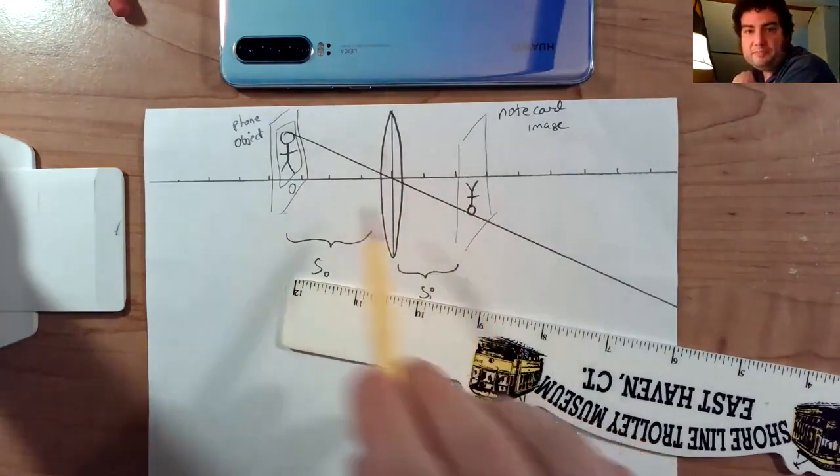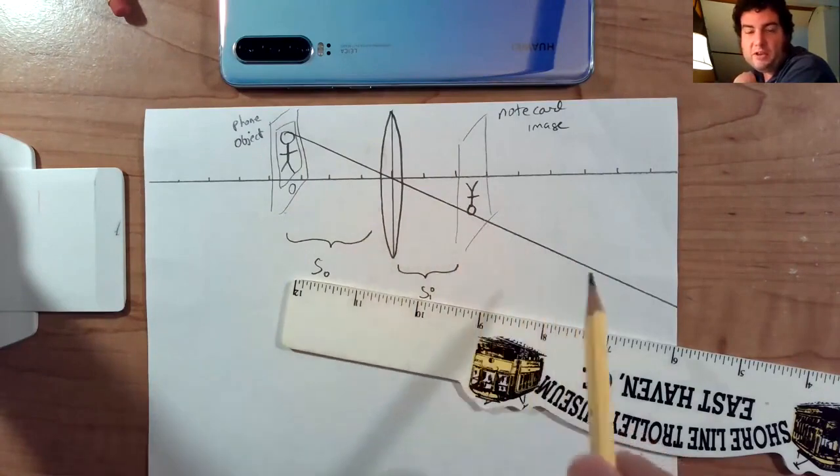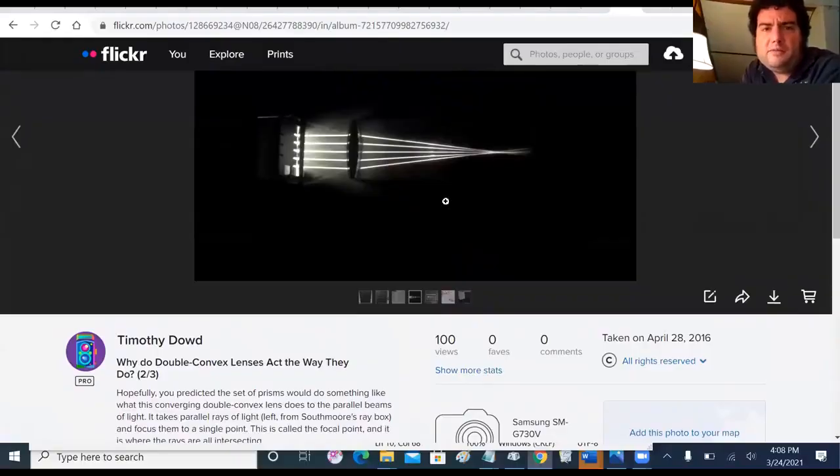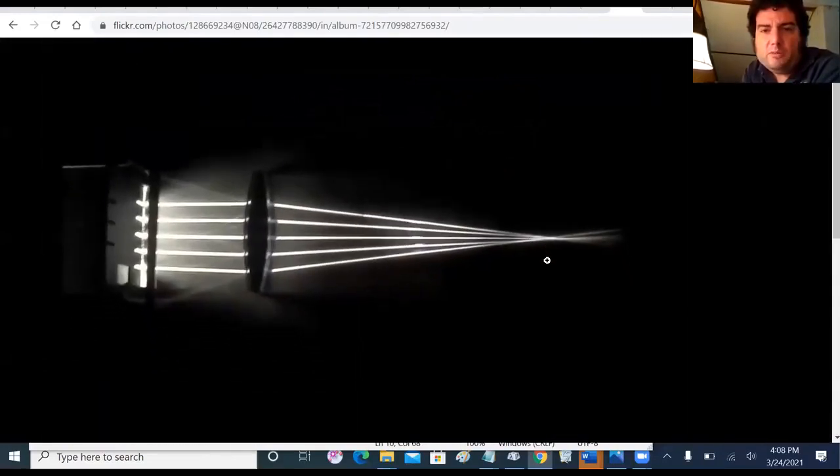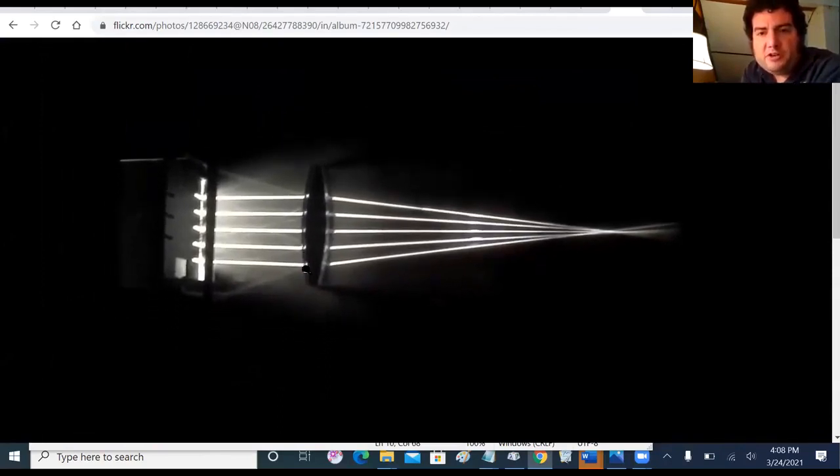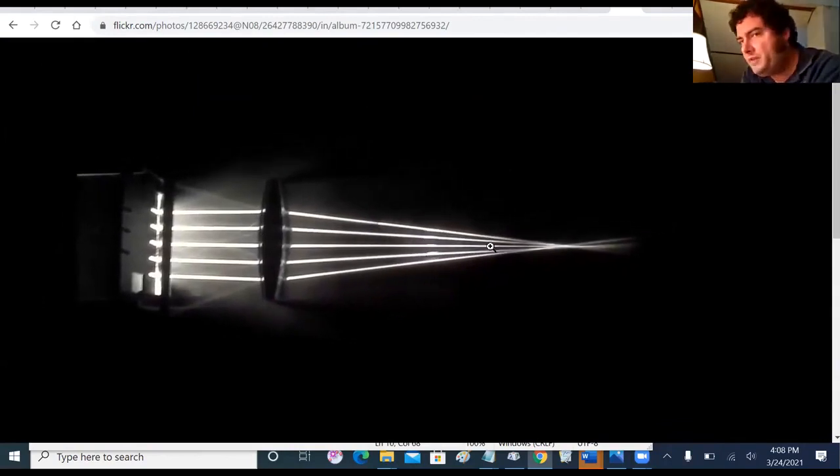That doesn't determine where this is. This could be anywhere along this line. In order to get an idea of where the image is, we need to know something else about the lens. A converging lens is going to take parallel beams of light and it's going to bend them and make them all pass through a point, which is known as the focal point. So different curvature on the lens is going to shift this focal point around. And that's going to be really important for us in figuring out where the image distance is for any given object.